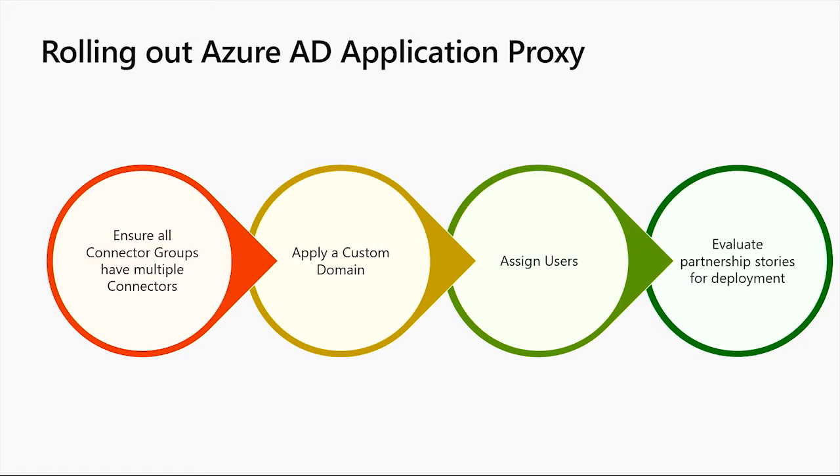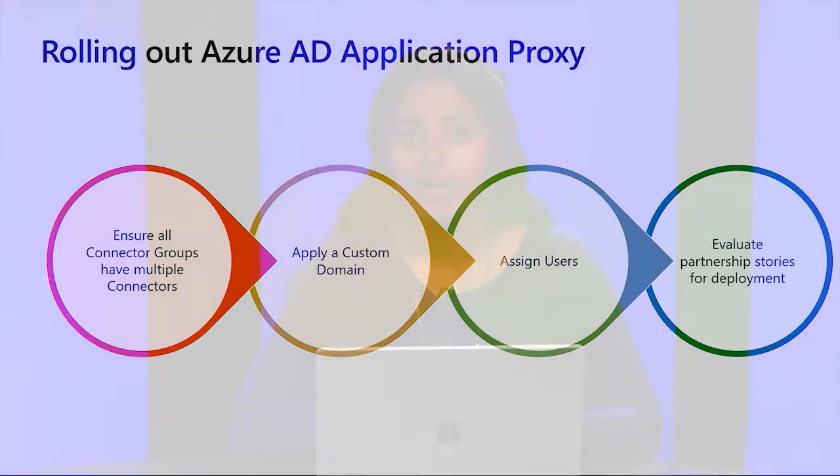Second, you may want to apply a custom domain. When you're configuring the application and providing an external URL, we give you a default domain that has the form yourtenant-msappproxy.net. However, there are a lot of benefits to using a bring-your-own domain, so for example, adventureworks.com or contoso.com, and you should consider and evaluate using a custom domain and setting your applications to use one of those.